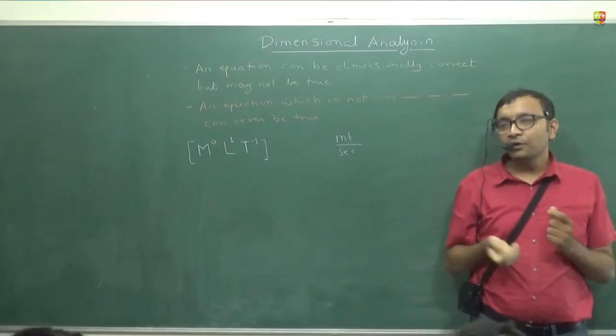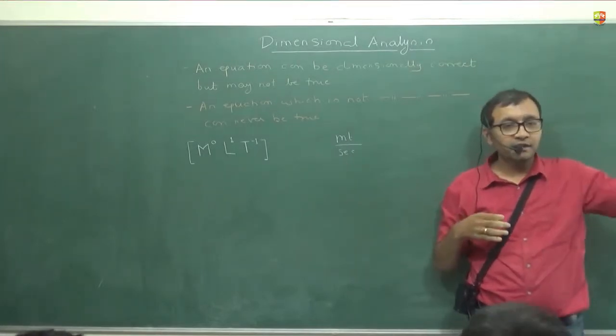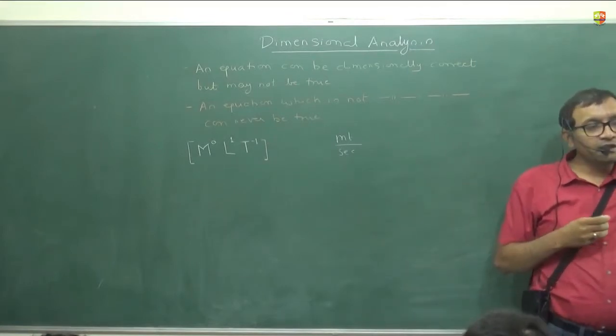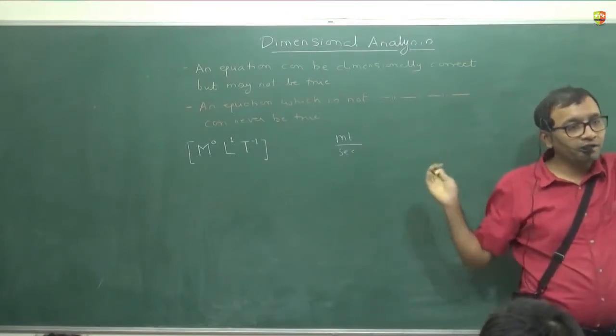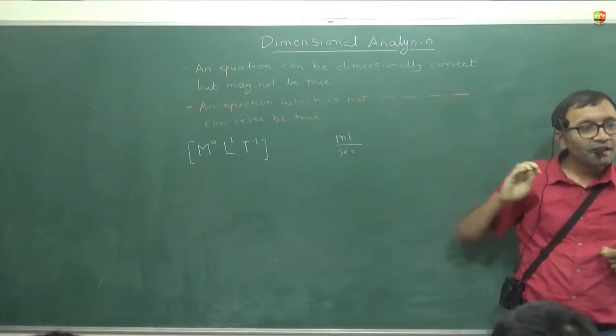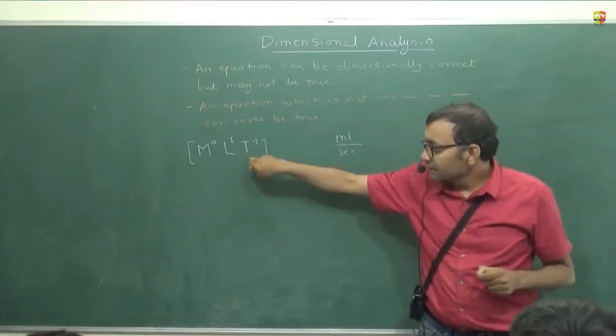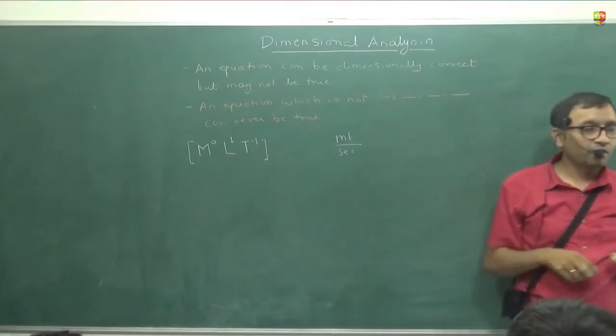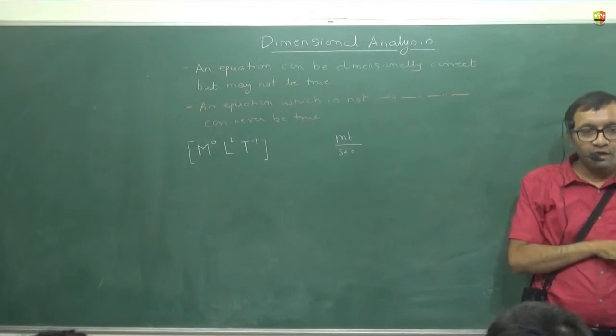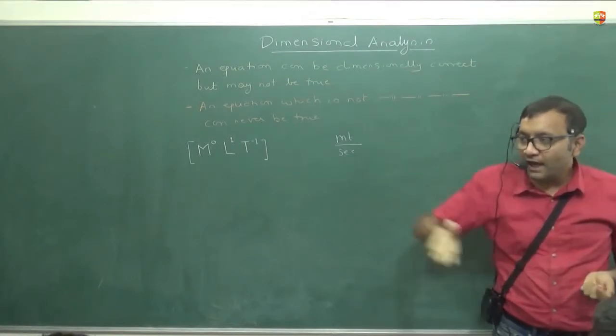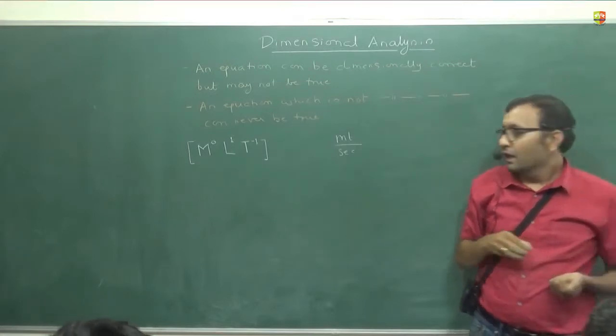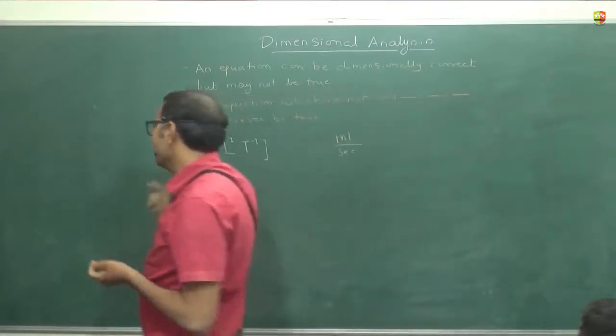So if you know that the speed is a division of meter and second like this. You can write it dimension as mass to the power 0. It has no dimension of mass. Okay? Length to the power 1 and time to the power minus 1. So this is the dimension of, this is the dimension of the speed. You can, you know, treat like universe has seven coordinate axis. One coordinate axis for mass, other coordinate axis for length, other coordinate axis for time.